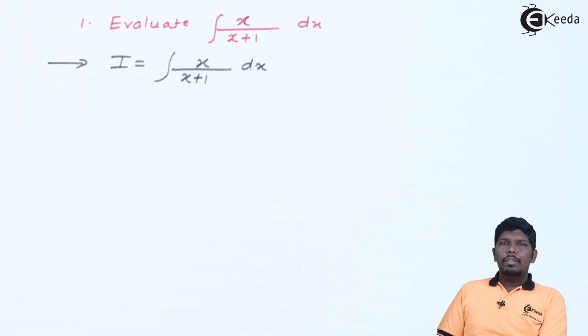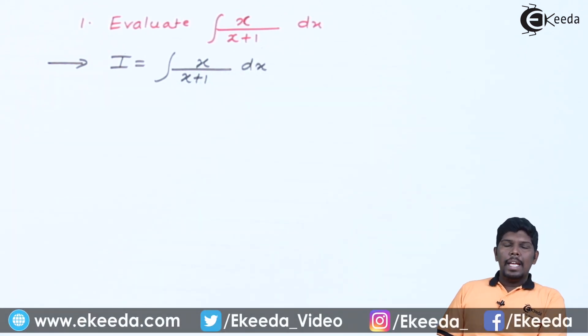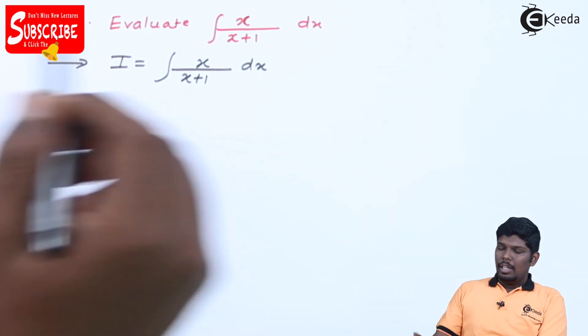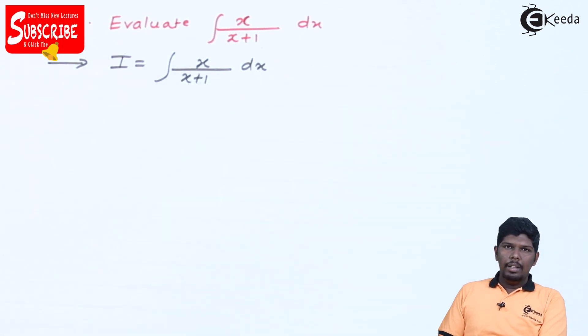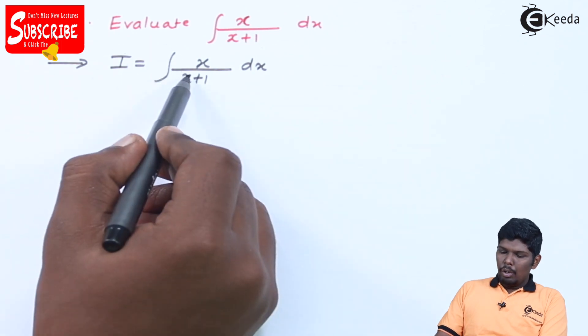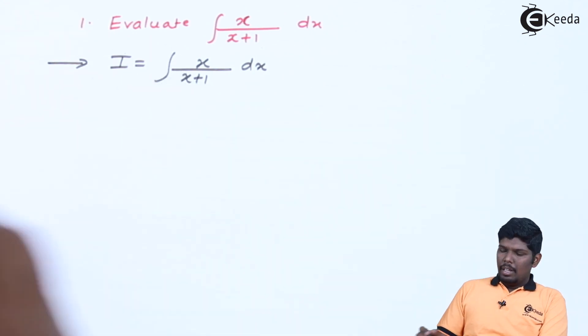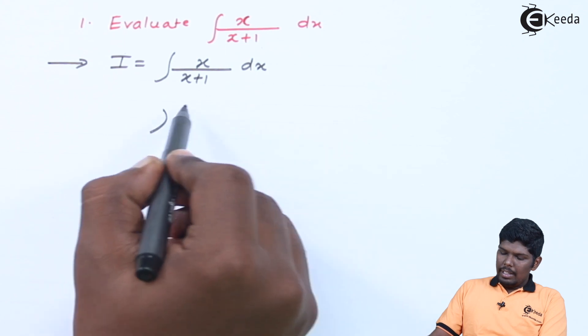The first rule of rational functions says that if the maximum power of numerator is greater than or equal to the maximum power of denominator then you can divide these equations. The maximum power of numerator is 1. Similarly the maximum power of denominator is also 1. Since they are equal we can divide this equation.